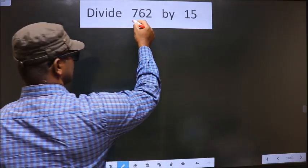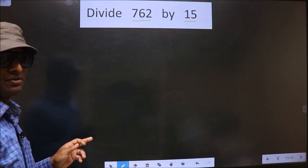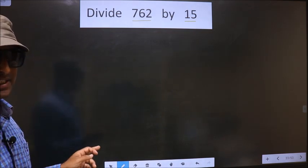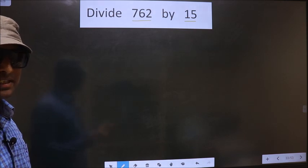Divide 762 by 15. While doing this division, many do a mistake. What is the mistake that they do?